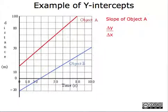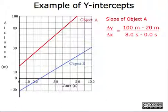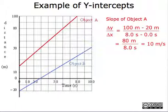The slope of object D is shown. The slope of object D can be calculated by using the equation: the change in y over the change in x. The change in y in this instance is 100 meters minus 20 meters, divided by the change in x, which is 8.0 seconds minus 0.0 seconds. So 100 meters minus 20 meters gives us 80 meters, divided by 8 seconds minus 0 seconds, which gives us 8 seconds. Altogether, the slope of object D is 10 meters per second.